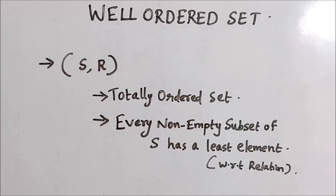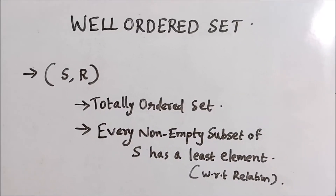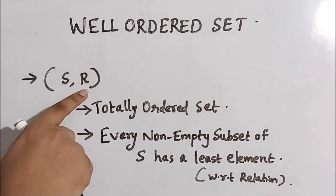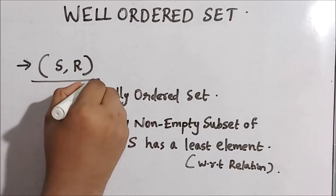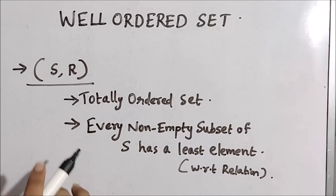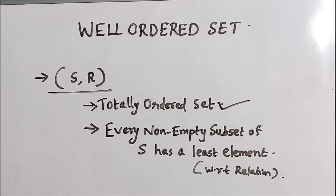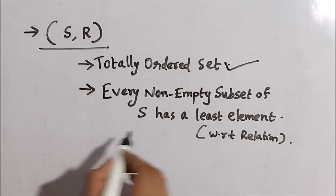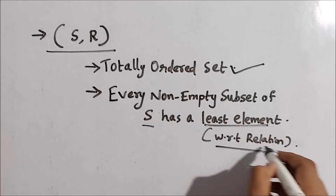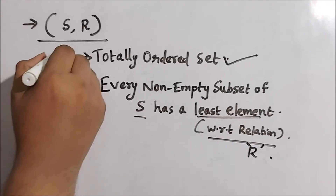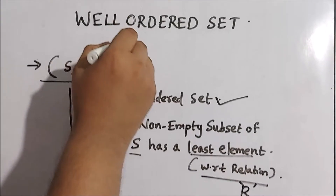Now we will see what is a well-ordered set, or when is a relation R called a well-ordering. Consider the set S together with the relation R defined on S. The first condition for S to be a well-ordered set is that S with R should be a totally ordered set. Also, every non-empty subset of S must have a least element with respect to the relation R. If these two conditions are met, then S together with R is called a well-ordered set.